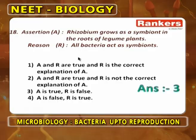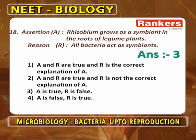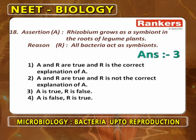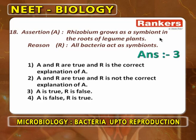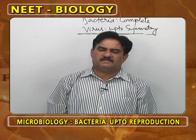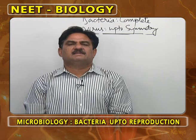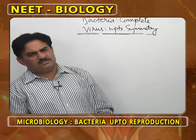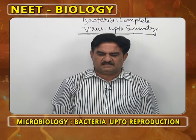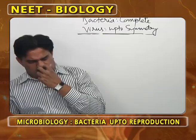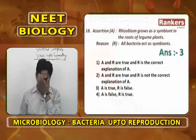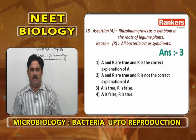Assertion-reasoning: Rhizobium grows as a symbiont in the roots of legume plants — correct. Rhizobium lives in root nodules, helps in nitrogen fixation. The reason states all bacteria act as symbionts — this is wrong because some are pathogenic, some saprophytic, some parasitic. So A is true, R is false.